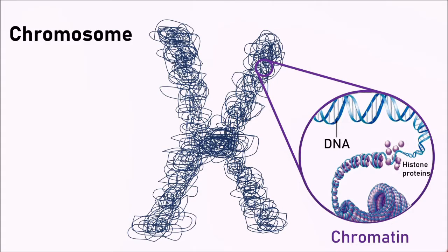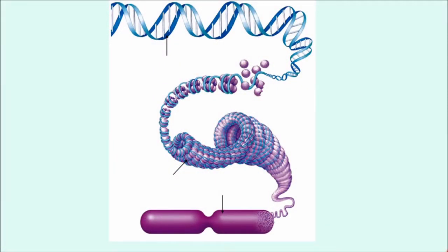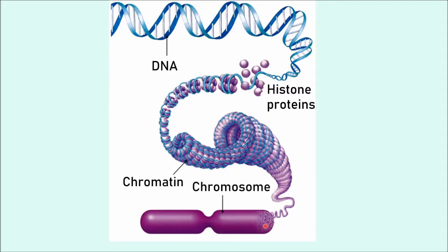Chromatin is just what we refer to as DNA plus these proteins. A structure formed of chromatin that contains one full DNA molecule is called a chromosome. To clarify: here is our molecule of DNA, it winds up on histone proteins, and this area is referred to as a nucleosome. Successive nucleosomes wind together, eventually forming a chromosome. Chromatin is the name for the material of protein plus DNA, while a chromosome is the full structure containing one full molecule of DNA.